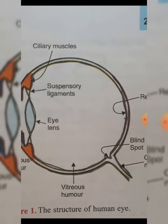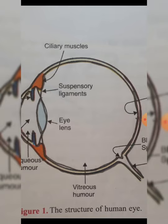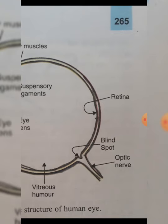The main components of the eye are a convex lens — the eye lens — and a screen called the retina. The eye lens forms the real image of the objects, and that is how we are able to see them.